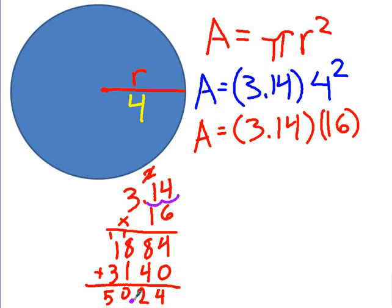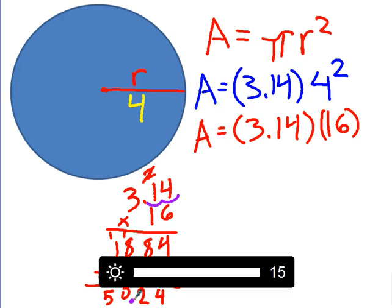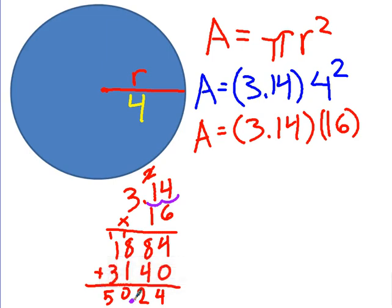So, the area of my circle is 50.24 square units. See, it's going to be a decimal. We're going to get a decimal all the time.